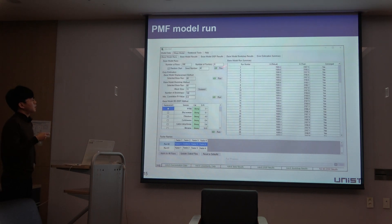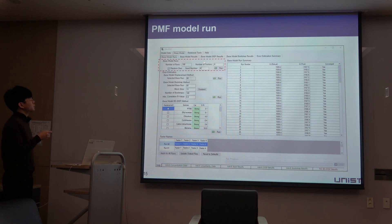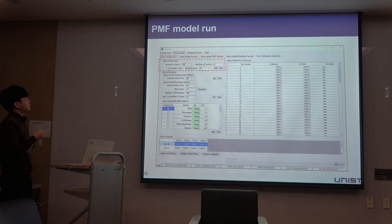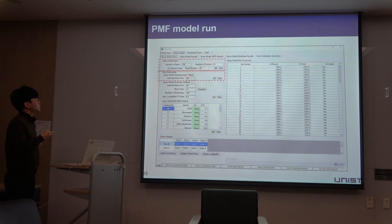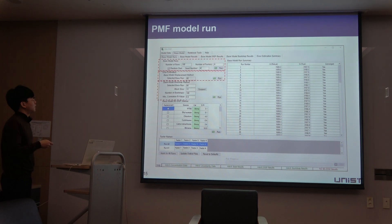This is the main option panel of the PMF model. In the first part, you can change the number of runs and the number of factors. I will explain how to select the number of factors. EPA recommends 100 runs, but you can also use 20. In the second part, you can estimate some errors. In the final part, you can get the final result of the PMF model.